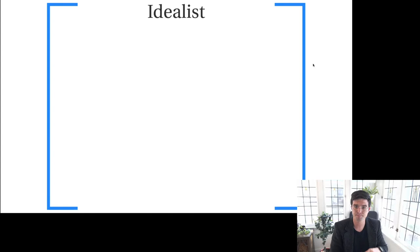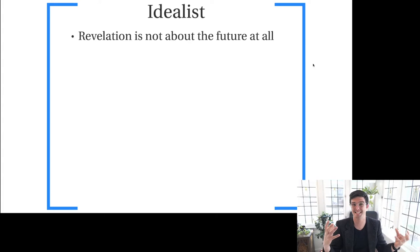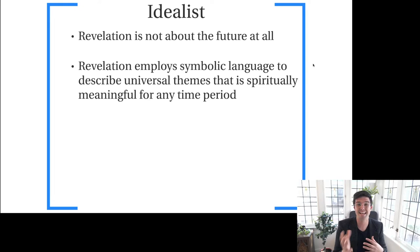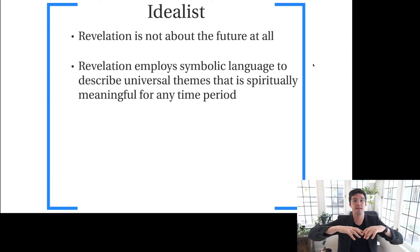The idealist approach takes more of a generalized tack — that Revelation is really not about the future at all, not meant to predict the future or tell what is to come. Rather, Revelation is dealing with universal themes of suffering, oppression, hope, and victory for Christians that is spiritually meaningful for people of any time period. It sort of eschews thinking about Revelation in its past historically or its future, and says the vivid and symbolic language is applicable to Christians of all times.